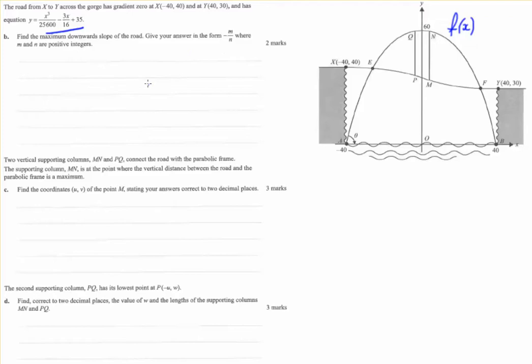Now what the question is asking is for the maximum downward slope of the road. So where across here is the gradient most negative? Looking up here, we're told the gradient is 0 here and here. We want to know where the gradient is most negative, and the value of that gradient is what we're looking to find.